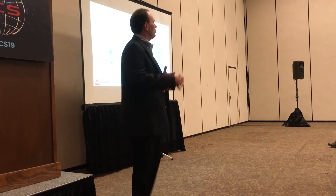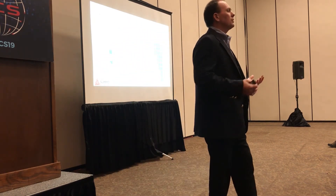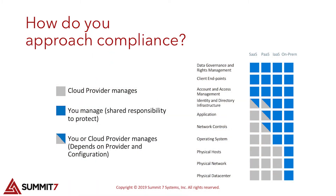There are different ways to approach compliance. You can build your walled garden entirely on-premises, but then you're responsible for everything: your physical data center, network, systems, OS, network controls — all the way up the OSI stack. If you decide to build in Amazon Web Services or Microsoft Azure, you're looking at IaaS and PaaS, and that means less you have to deal with from a compliance standpoint because the provider is handling some of those things for you.